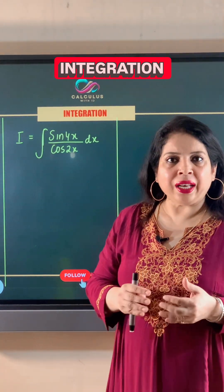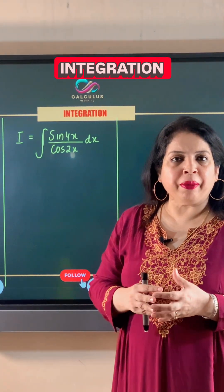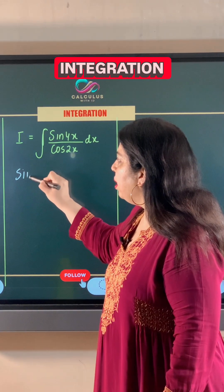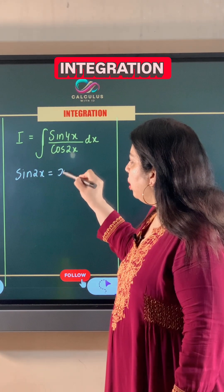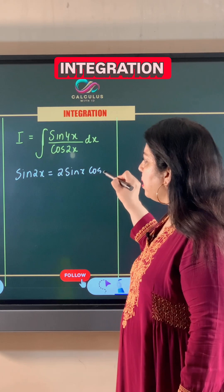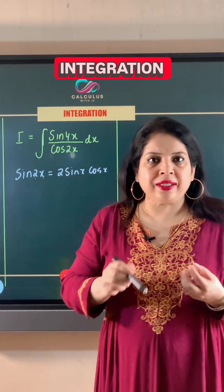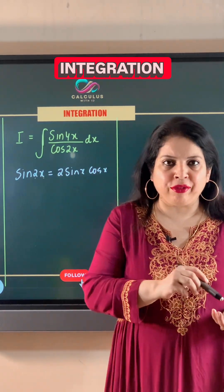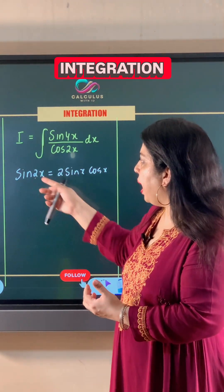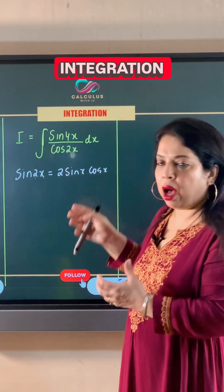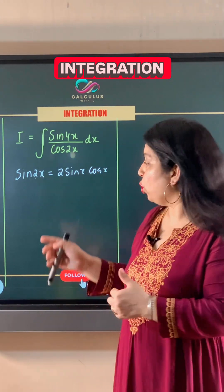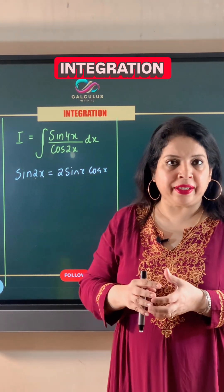In this case, we can apply the trigonometric identity sin 2x to the numerator. Sin 2x is equal to 2 sin x cos x. Now we have 2x as the angle on the left hand side, so on the right hand side, just notice that the angles become half of 2x — half of 2x is x — so the angles are x on the right hand side.